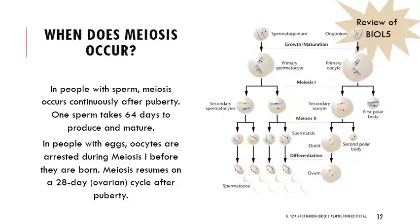Meiosis occurs in people with sperm continuously after puberty, with a single sperm taking about 64 days to produce and mature. In people with eggs, oocytes are arrested during meiosis I before these people are born, then meiosis resumes on a 28-day ovarian cycle after puberty and continues until menopause.